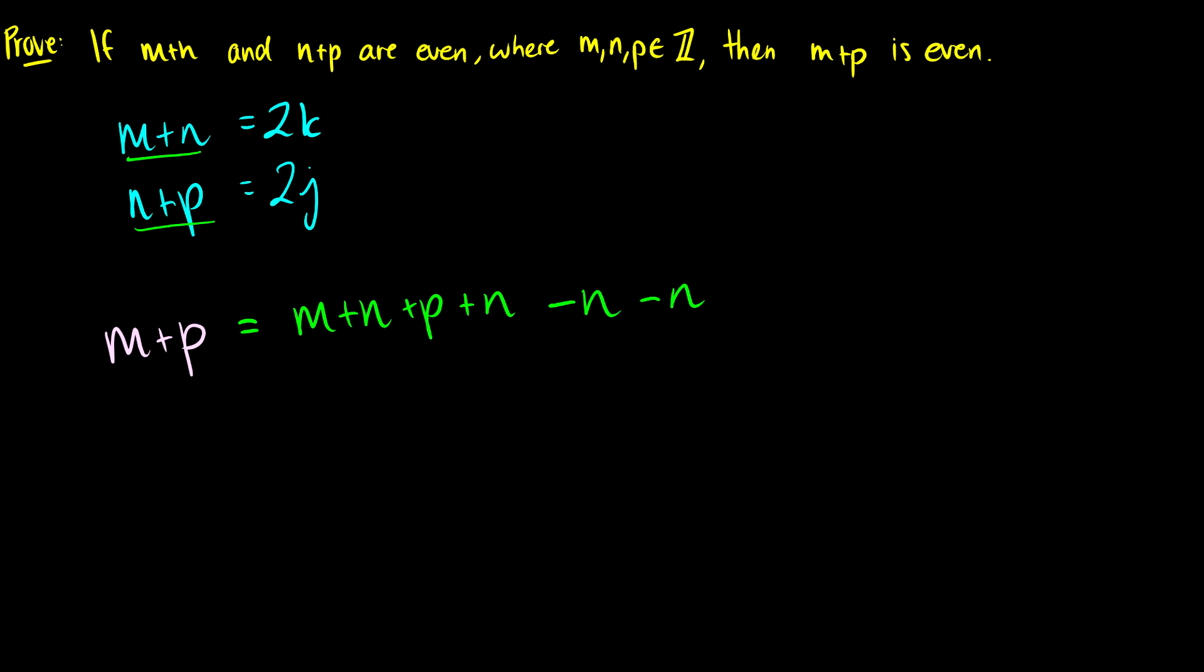So essentially we're adding zero, but we're doing it in a very special way. So now we can group these things together. So this is the same thing as saying m plus n is the same as 2k, p plus n is the same as 2j, and minus n minus n is the same thing as minus 2n. So we can factor out a 2.